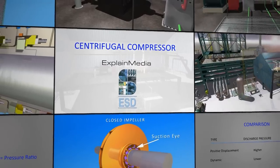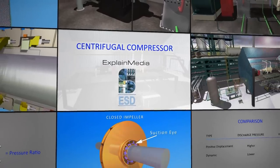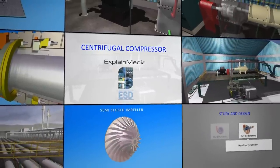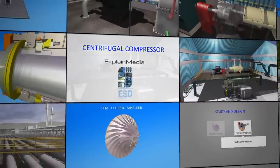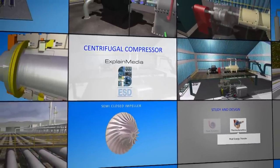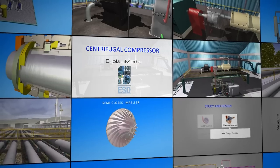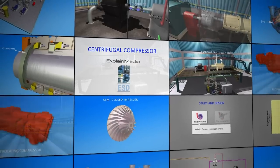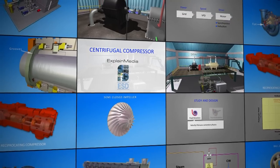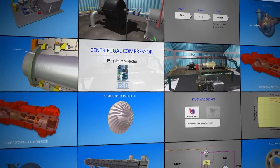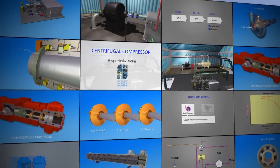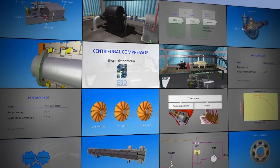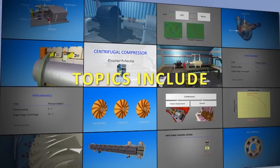Compressors are used in many applications for industrial and even common domestic equipment. In this video, we will look first at the basic principles behind the operation of a centrifugal compressor. We will then go on to look at the construction of the compressor, the ancillary equipment, and systems that support compressor operation, and finally how a compressor is controlled.